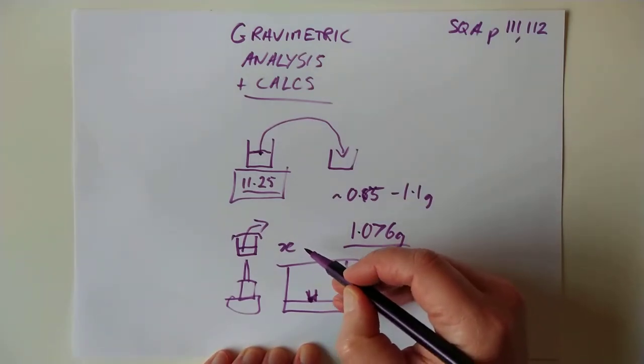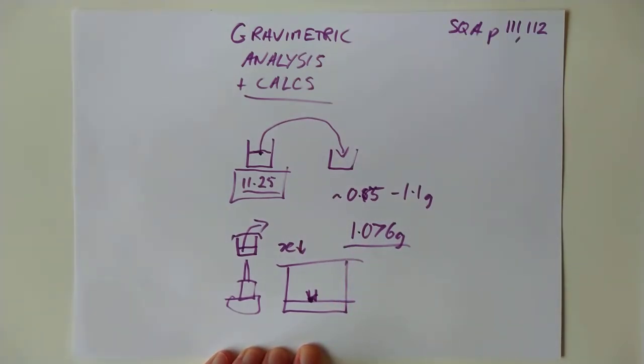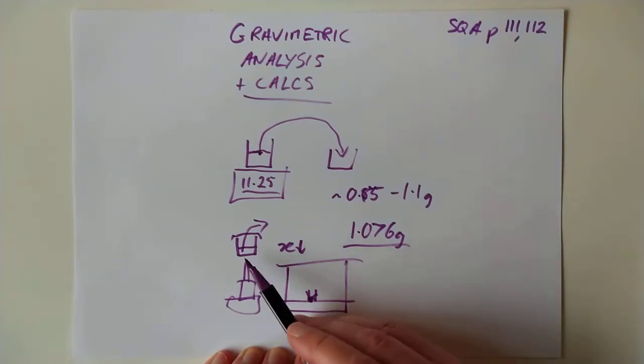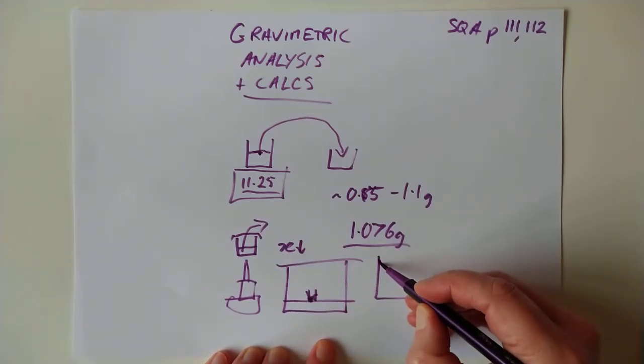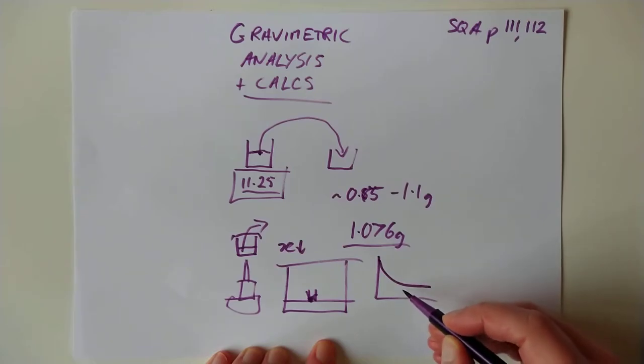So there's your... What's that meant to be? That's meant to be the crucible. Sorry. Pop your desiccator in the crucible to cool, and then put it back on the scales again, and you'll now find it's less than X.